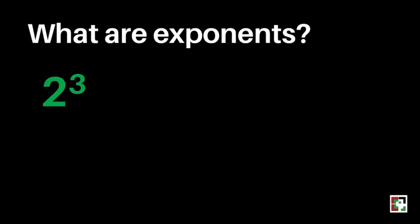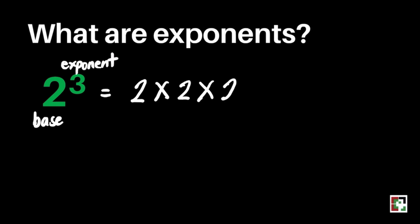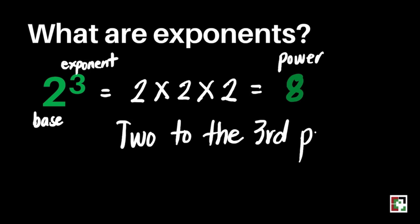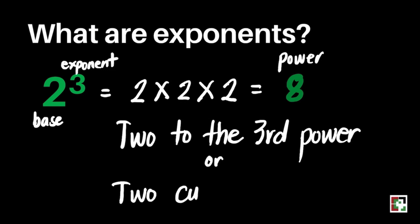We have the next one here. 2 is our base, 3 is our exponent. This is equivalent to 2 times 2 times 2. 2 times 2 is 4, and 4 times 2 is equal to 8. 8 is our power. This is read as 2 to the 3rd power, or 2 cubed.